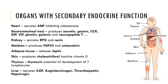Adipose tissue releases leptin following uptake of glucose and lipids, resulting in a feeling of fullness. The skin produces cholecalciferol, the inactive form of vitamin D. The thymus gland, located posterior to the sternum between the lungs, is very large in infants, increases in size until puberty, then shrinks with age. Its major hormonal product is thymosin, which is essential for normal development of T lymphocytes and the immune response. In the liver, thrombopoietin is produced for stimulation of platelet production, and angiotensinogen is produced to form other versions of angiotensin.